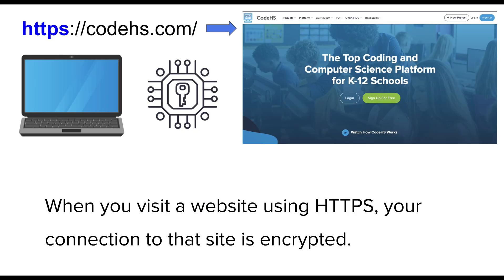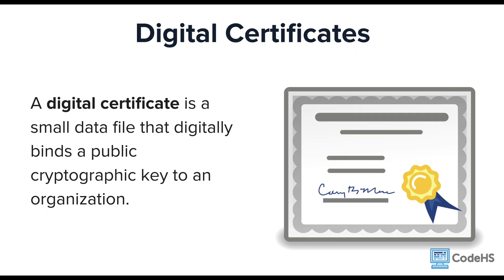You might remember learning about websites and using HTTPS. When the website begins with HTTPS, this means your connection to that site is encrypted — any information you send or receive on that site is also encrypted. The encryption typically uses a public key and a private key. So when we visit websites that start with HTTPS, there's an additional level of security called a digital certificate. A digital certificate is bound to a public key. You can think of this certificate as a virtual ID card for a website — a small data file that digitally binds a public key to an organization.